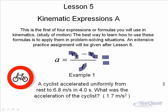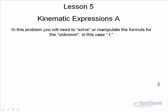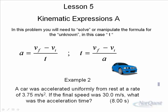The next one is a little more of a challenge. In this problem, you'll have to solve or manipulate the formula for the unknown. In this case, the problem is that a car was accelerated uniformly from rest at a particular rate of acceleration. The final speed was 30 meters per second. What was the acceleration time? In order to do this problem, because you are not given vf and vi and t to just substitute in to get a like you did on the first equation, you need to manipulate this formula and solve for t.